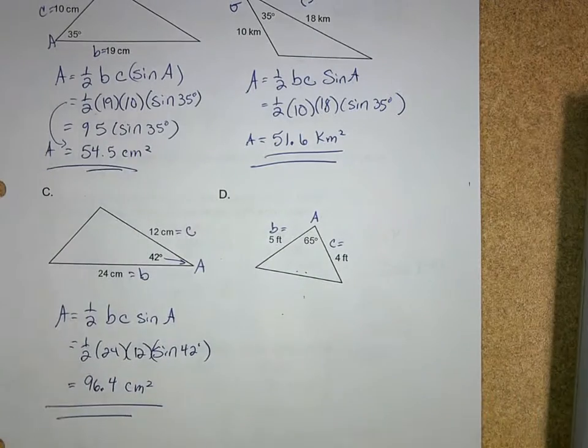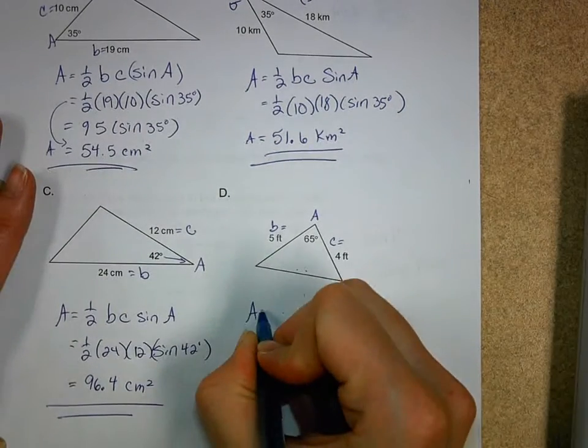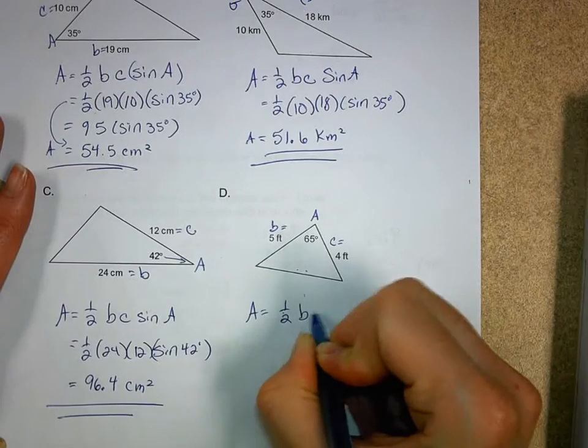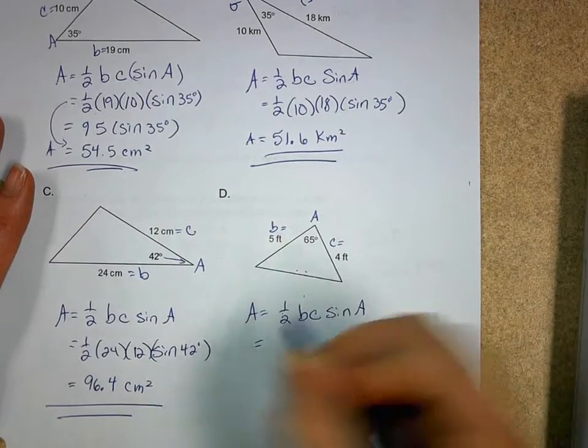Okay, which one's B, C, and A? A just has to be the included angle. So I get one half, B, C, sine A, and plug it in.